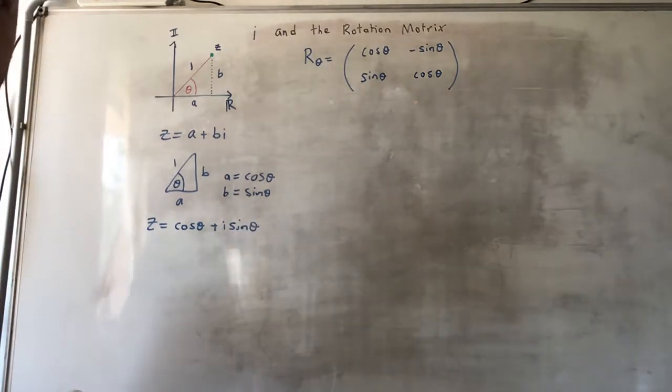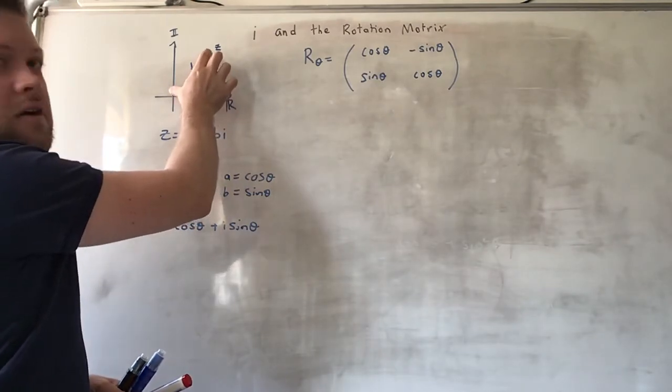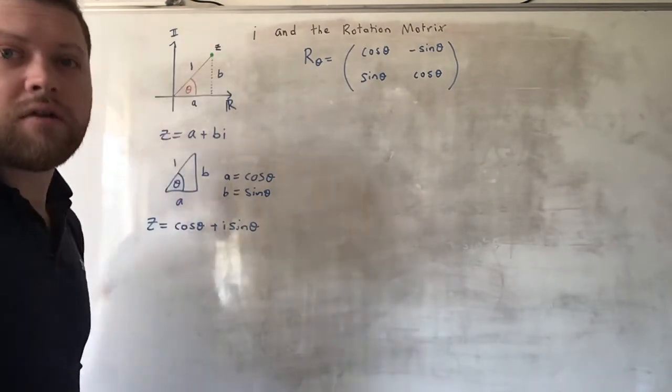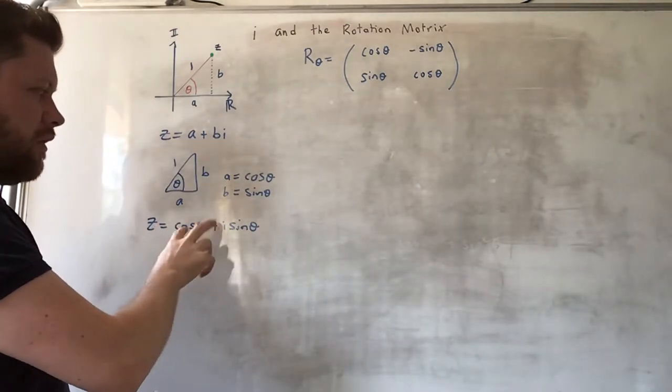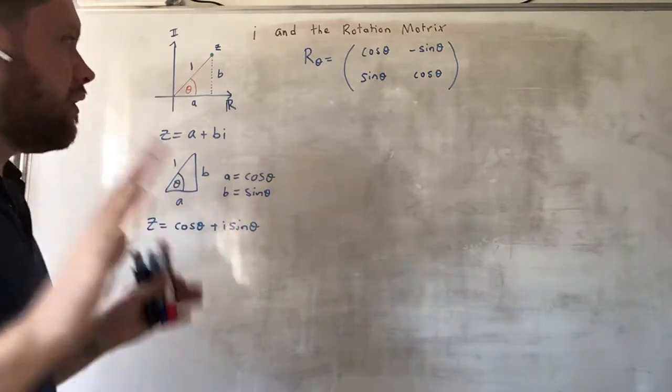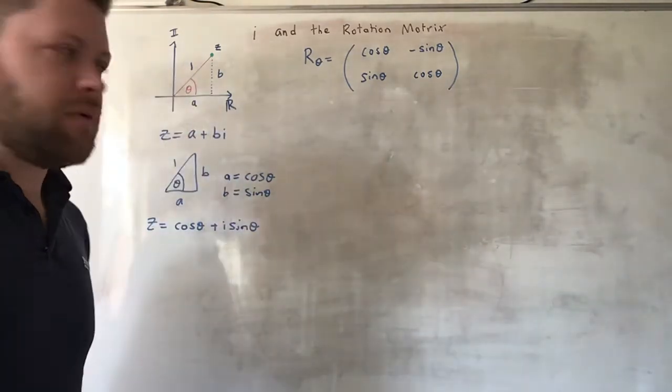Now obviously if we had let this length of the hypotenuse be any number R, say for radius, then there will be an R in front of these two terms. But for simplicity's sake, let's just take a unit circle in the complex plane.